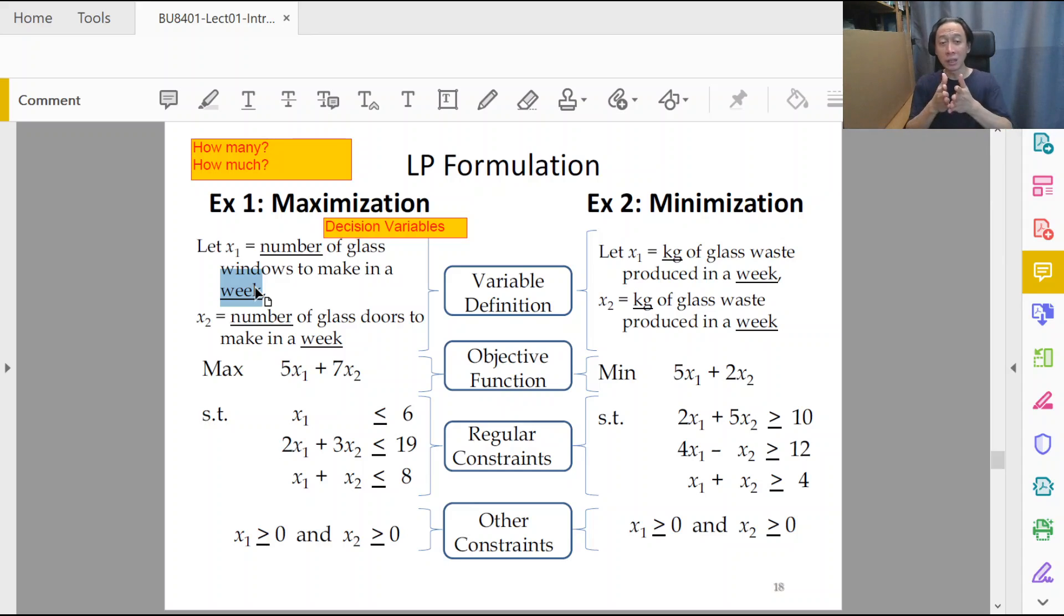Make sure the unit is very clear, no doubt about it. Make sure the time duration is very clear. Suppose I say let x1 be the number of glass windows to make, finish. So when I solve it from Excel I get x1 equals five.